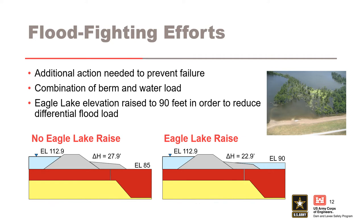This decision resulted in the impact of approximately 800 residents around Eagle Lake whose property became flooded. However, this was measured against the possible inundation of approximately 3,000 homes and 1,450 square miles of largely agricultural land if the levee embankment were to fail. The deviation request was formally approved by the Mississippi Valley Division commander on April 28th, and the gates at the control structure were opened on April 30th to allow the elevation of Eagle Lake to rise.